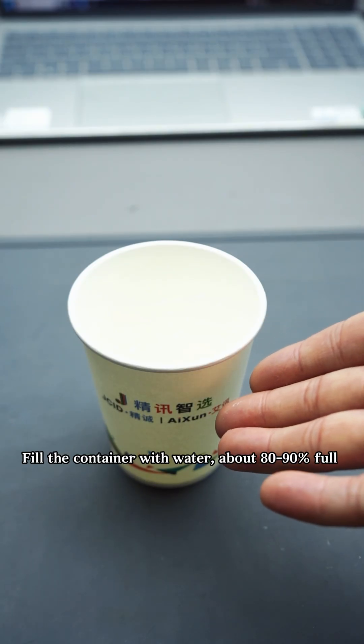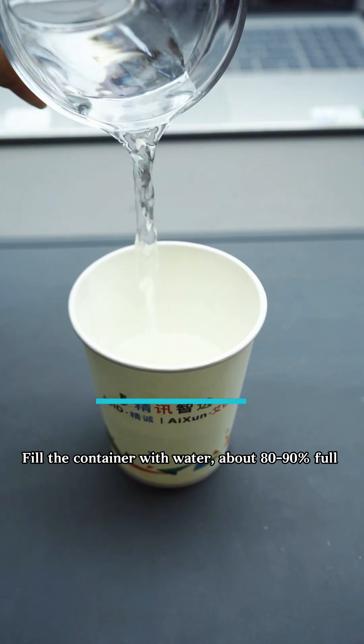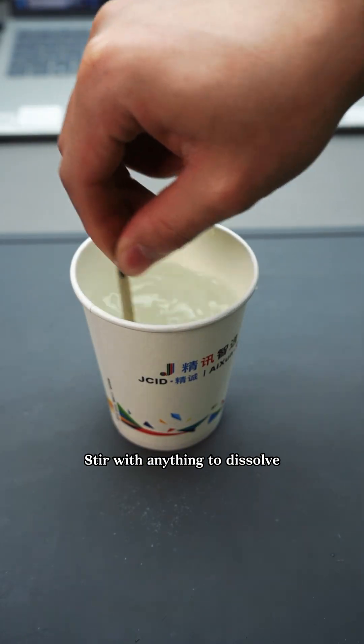Step 1: Make the electrolyte. Fill the container with water about 80 to 90 percent full. Add a suitable amount of baking soda. Stir with anything to dissolve.